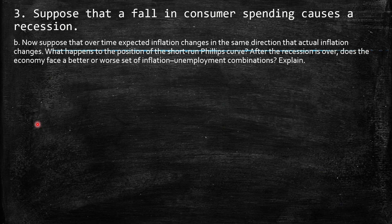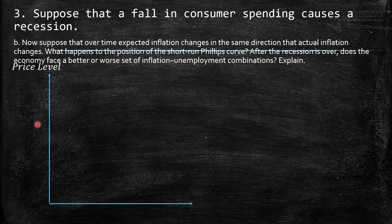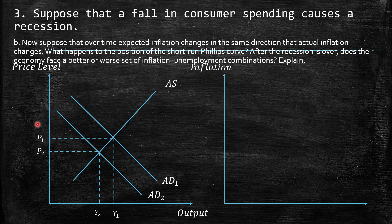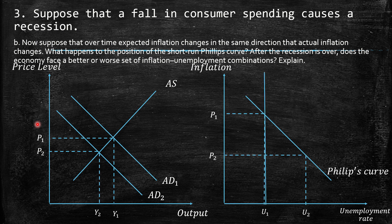Part b: suppose that over time expected inflation changes in the same direction as actual inflation. What happens to the position of the short-run Phillips curve? After the recession is over, does the economy face a better or worse set of inflation and unemployment combinations? Starting from EU1 and P1, with the recovery the aggregate demand shifts to the right again, so we face the same level of prices and output. We return to P1 and EU1 due to the movement along the Phillips curve.